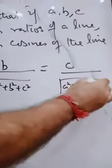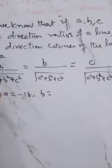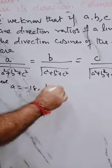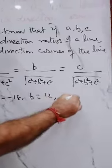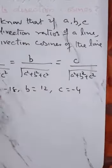Let's put the values. Direction cosines, we have a equals minus 18, b equals 12, and c equals minus 4. So putting this value.